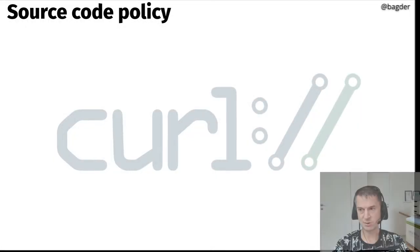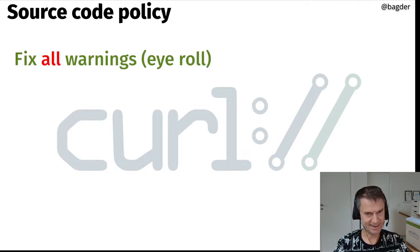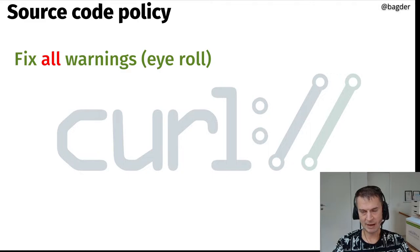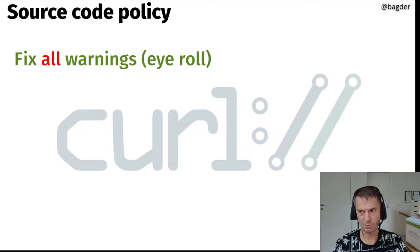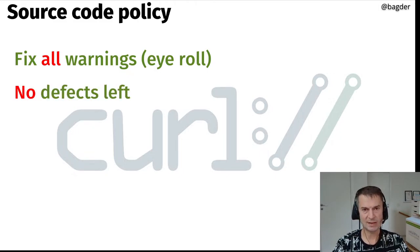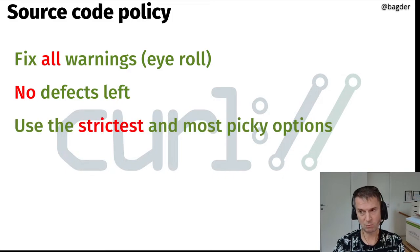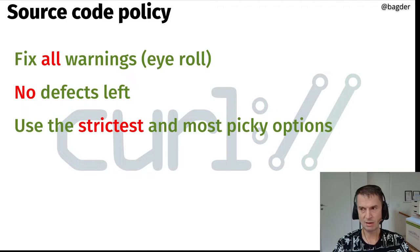We have a source code policy: code we land should ideally fix all warnings. That's sometimes easier said than done, especially on long-tail platforms or legacy Unix systems where fixes can be mutually exclusive — you fix a warning on one platform and it comes back on another. But we fix warnings on all major compilers and platforms. We don't leave any known defects that any code analyzer finds, and we work hard to remove false positives so that when we do get a warning, we know to take it seriously.